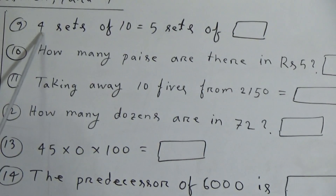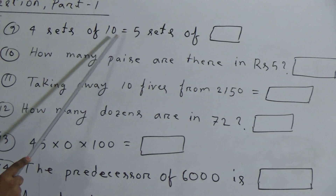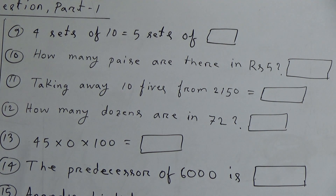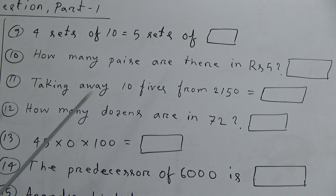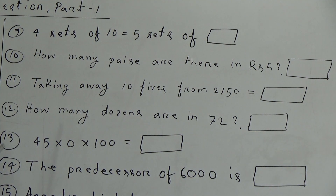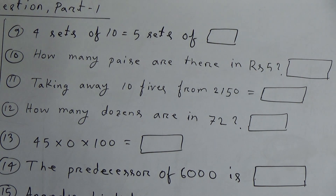Ninth question: 4 sets of 10 is equal to 5 sets of what? 4 sets of 10 means 4 multiplication 10, and 4 times 10 is equal to 40. Now, 5 sets of what equals 40? We know that 5 eights are 40. So the answer is 8.